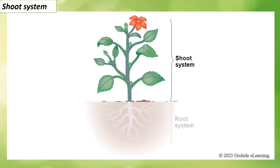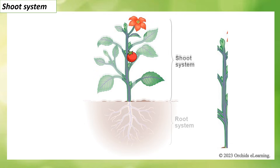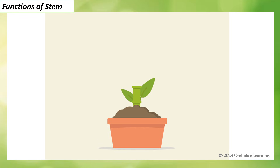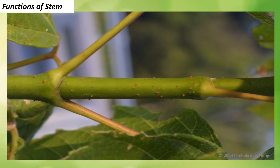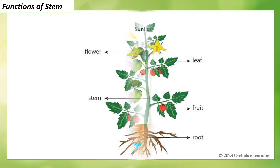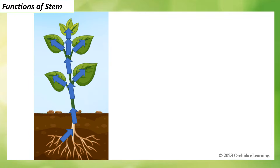The shoot system: all parts of a plant above the ground form the shoot system; it includes stem, leaf, flower, fruit, etc. The stem is a very important part of the plant. Functions of a stem: it holds leaves in position and helps them to spread out as the stem and branches grow, ensuring they get enough light for photosynthesis. It bears flowers, buds, leaves, and fruits. It conducts water and mineral salts from the roots to the leaves.